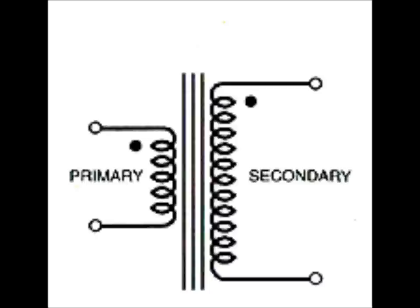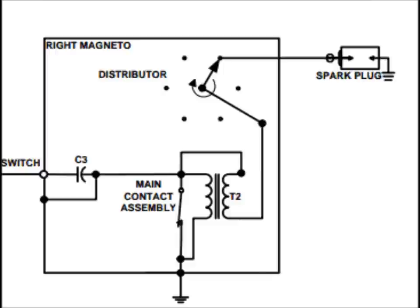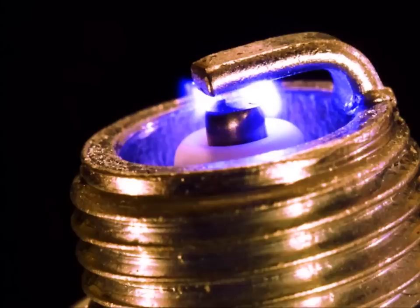The secondary coil has a far greater number of turns, meaning that the induced current is of much higher voltage. The current is then routed to a distributor where it crosses a small air gap, travels down a lead, and creates spark inside the combustion chamber.